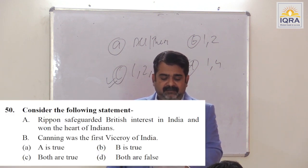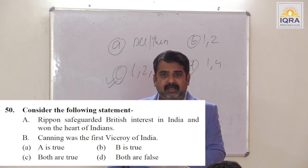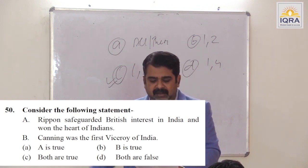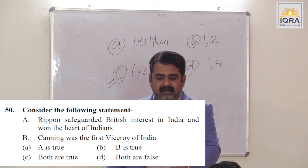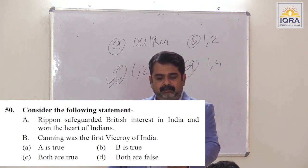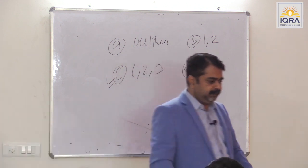Florence Nightingale called Ripon the savior of India. Ripon safeguarded British interests in India and won the heart of Indians — consolidator. Canning was the first Viceroy of India. Both are true. Answer is C.